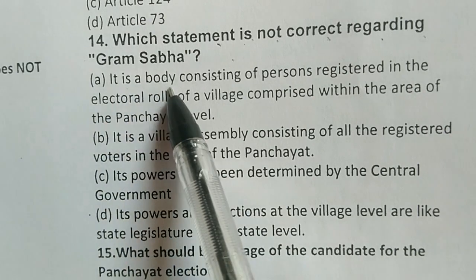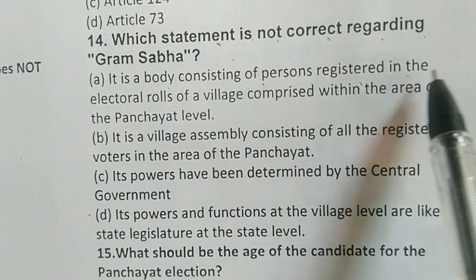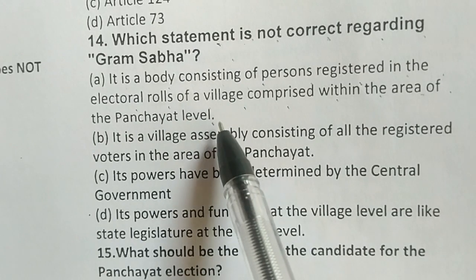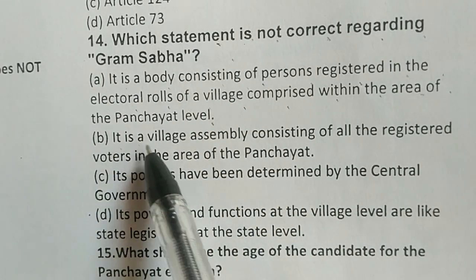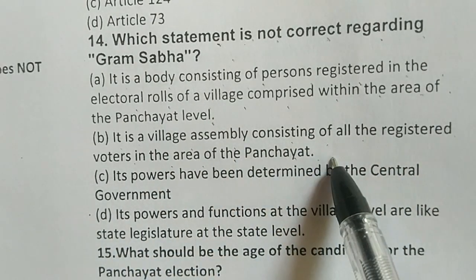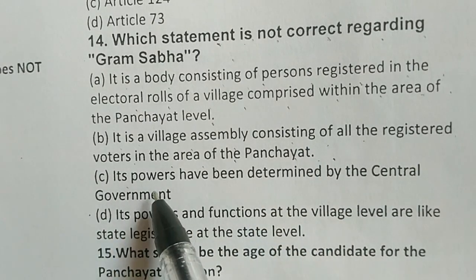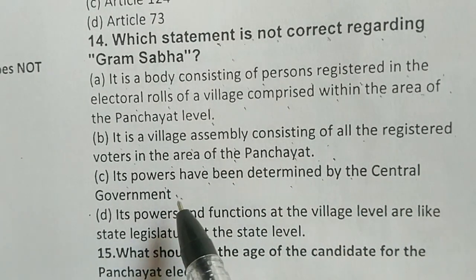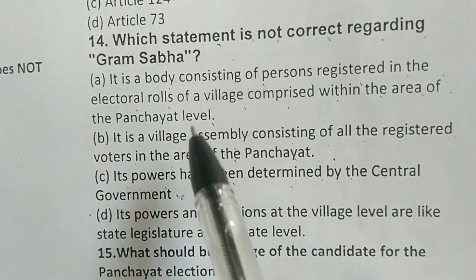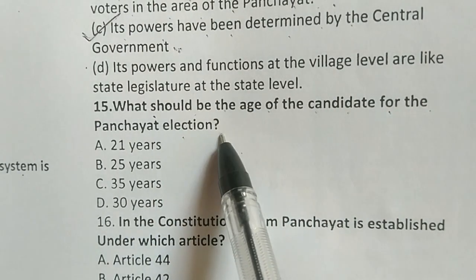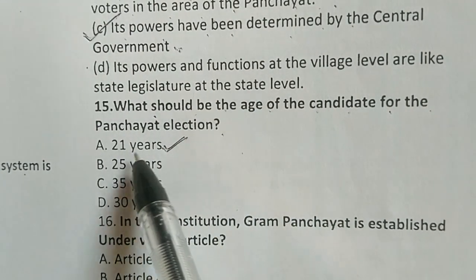Regarding Gram Sabha: option A — it is a body consisting of persons registered in the electoral rolls of a village comprised within the area of the Panchayat — is correct. It is a village assembly consisting of all registered voters in the area of the Panchayat — also correct. However, its powers being determined by the central government is not correct. The correct answer is option C. What should be the minimum age of a candidate for Panchayat election? The correct answer is 21 years — option A.